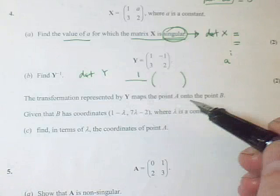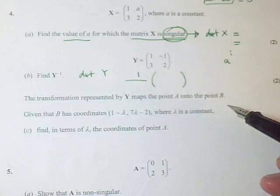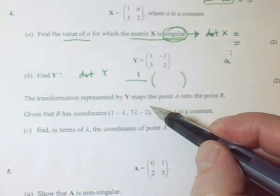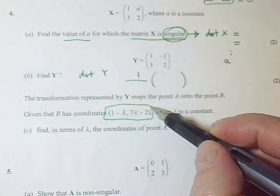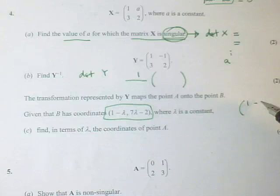And then we have got Y mapping A onto B, and they give us the coordinates of the image. So as a column vector, 1 minus lambda 7, lambda minus 2.